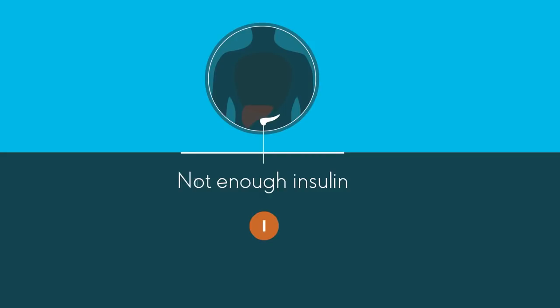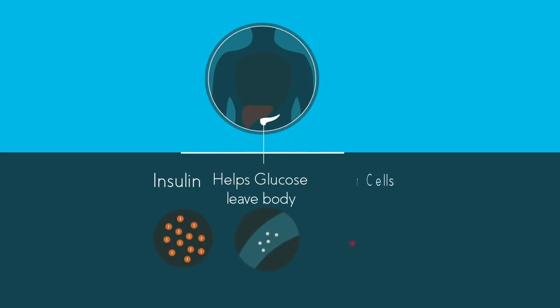Insulin helps glucose leave our blood and enter into our body's cells. Let's have a look at this process in a little more detail.